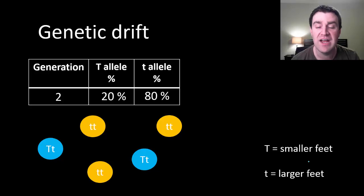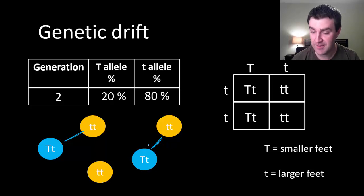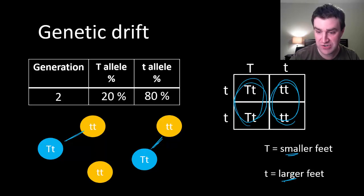Another possibility might be the randomness of sexual reproduction. What if these two organisms mate together and these organisms mate together and reproduce offspring? You might remember from genetics that if we were to make a Punnett square, we would predict that about half the offspring they produce should have smaller feet and about half should have larger feet.